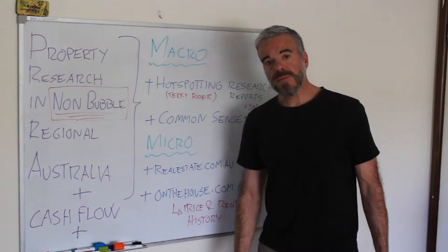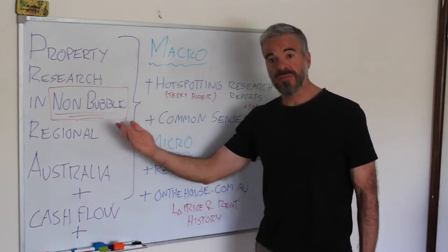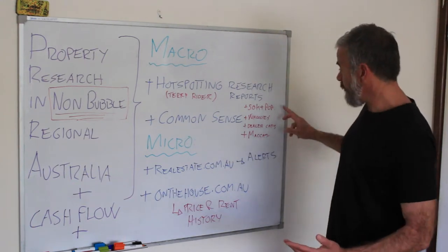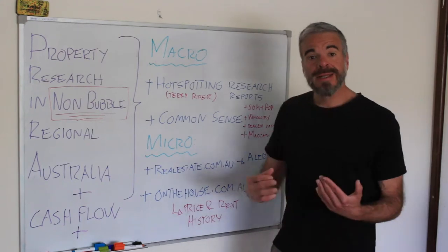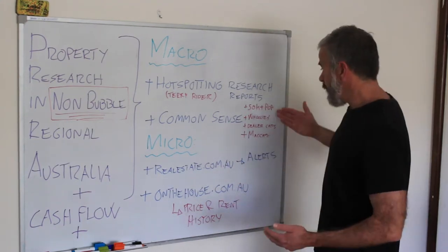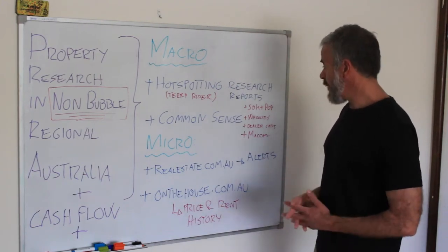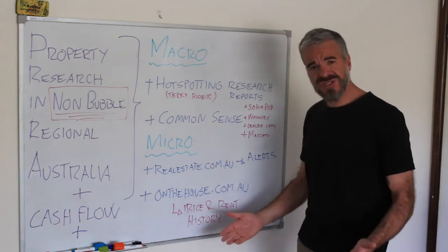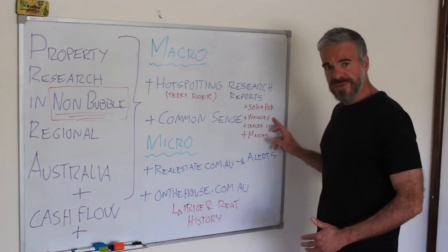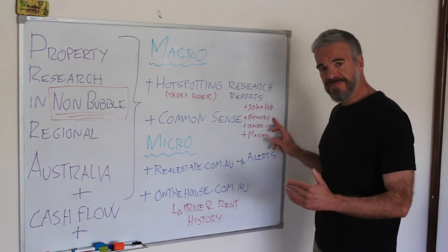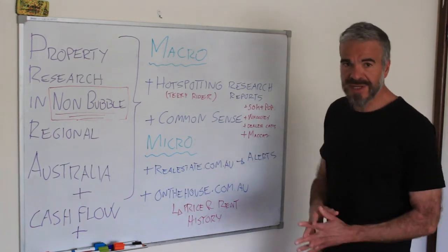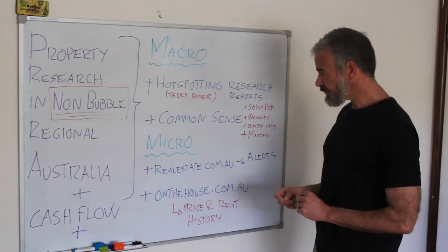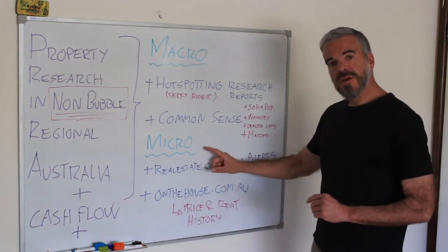There's another aspect I factor into the macro research that I call common sense. I have certain parameters I think about when investing in a regional center: more than 50,000 people in terms of population, and you've got to have your Woolworths, your car dealerships, your McDonald's, your KFCs. If Woolworths has invested millions of dollars in facilities in those areas, you're not going to go wrong with a small house there. There's a lot more to it, but you'll find the details in the reports.